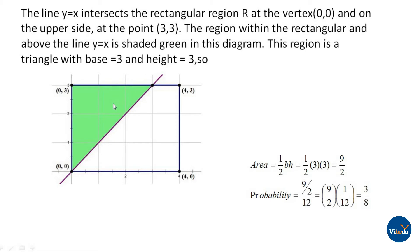The region is a triangle with base 3 and height 3. The area of a triangle is 1/2 base times height. So 1/2 times 3 times 3 equals 9/2.